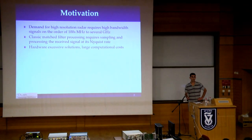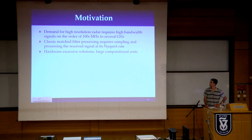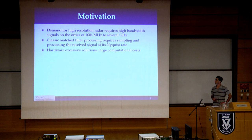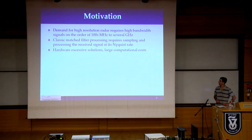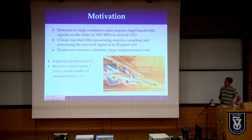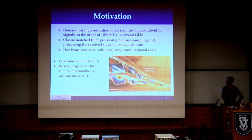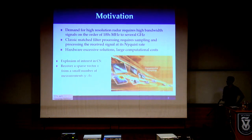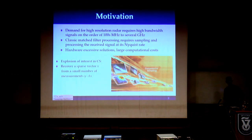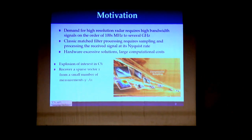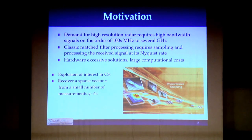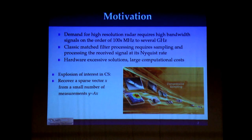I'd like to start with a little motivation. Recent years have shown an increase in radar system bandwidth, and ultra-wideband systems have become increasingly common. On the other hand, the appearance of compressed sensing has shown us how to recover signal information from a small number of measurements. What we're going to show in this work is how to combine these two together in order to create radar systems which work well below the Nyquist rate.